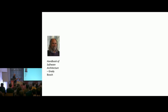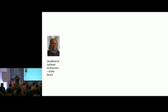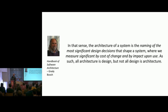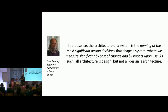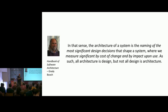Grady Booch — one of the people behind the early classic books on object-oriented programming and early versions of UML — said: 'The architecture of the system is the significant design decisions, where we measure significance by cost of change and impact.' You will hear this idea a lot: architecture is all the hard-to-change things, the decisions that if not made correctly at the beginning will be very difficult to reverse.